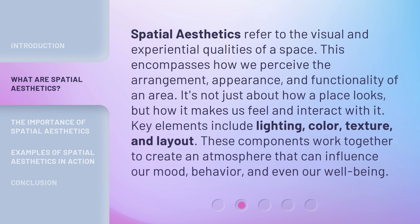Spatial aesthetics refer to the visual and experiential qualities of a space. This encompasses how we perceive the arrangement, appearance, and functionality of an area. It's not just about how a place looks, but how it makes us feel and interact with it. Key elements include lighting, color, texture, and layout. These components work together to create an atmosphere that can influence our mood, behavior, and even our well-being.